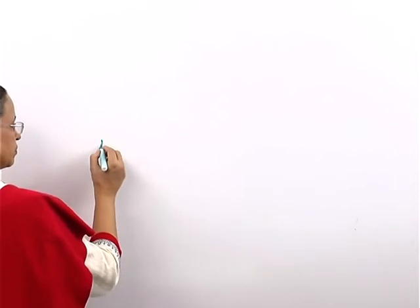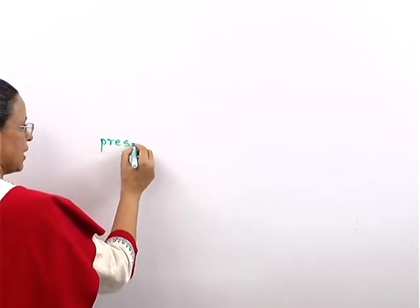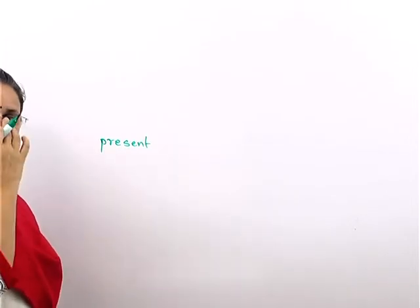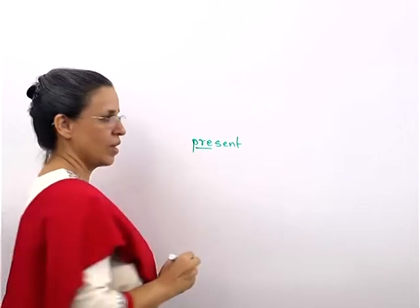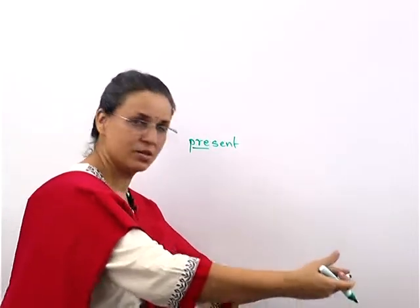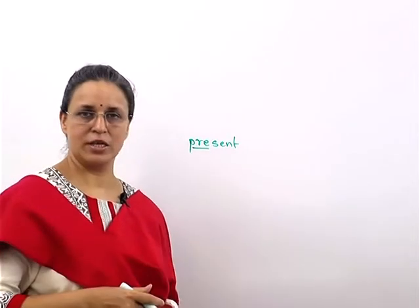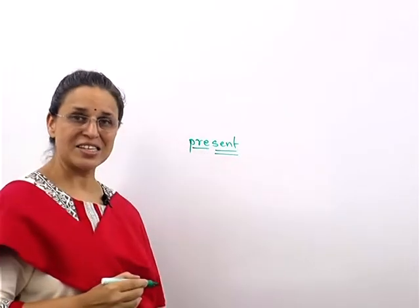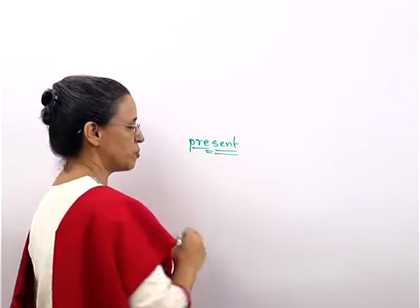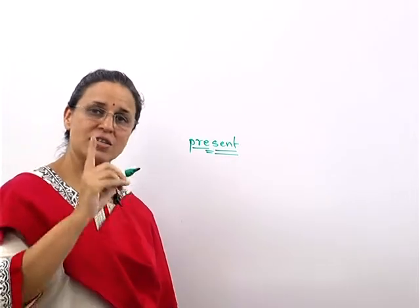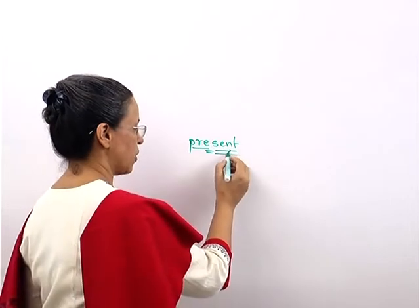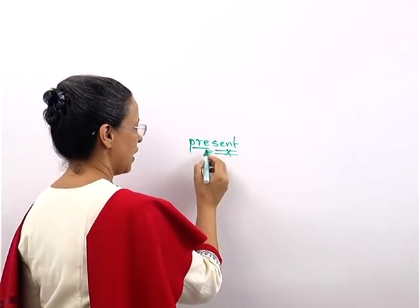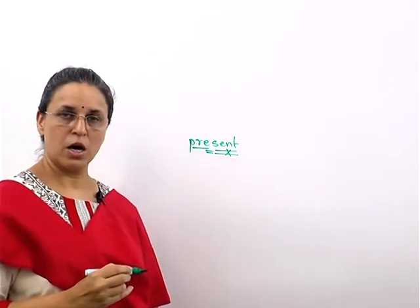For example, if I say 'present' with stress on the first part, it means to give — it's a verb. But if I say 'present' with stress on the second part, it means a gift or the opposite of absent — it's a noun. Similarly, 'conduct' with stress on the first part means behavior, a noun. But 'conduct' with stress on 'duct' means to conduct a meeting — a verb. Where you put the stress can change the meaning.